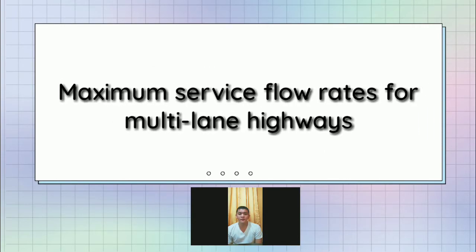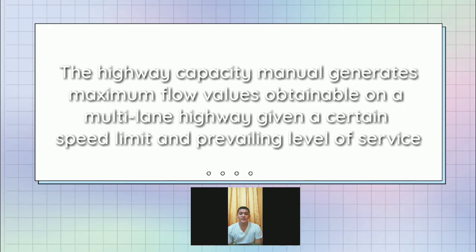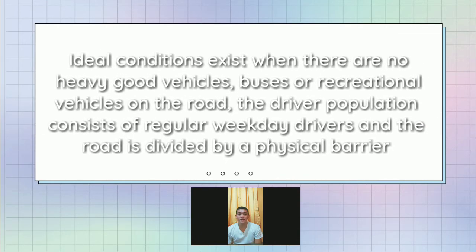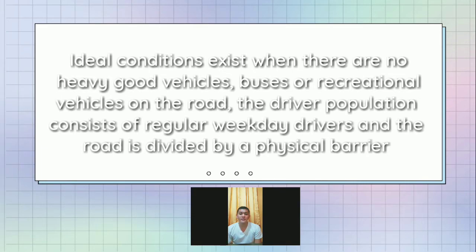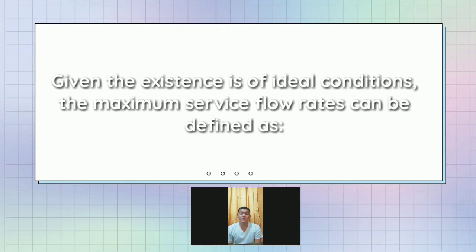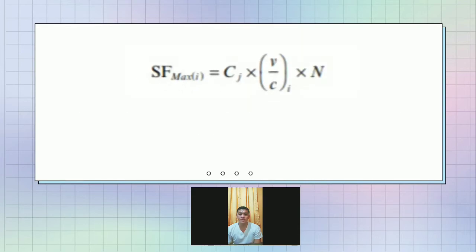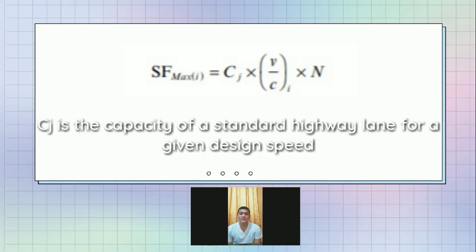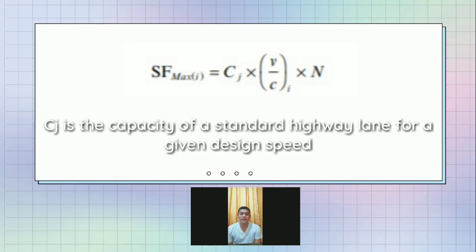Maximum service flow rates for multi-lane highways. The highway capacity manual generates maximum flow values obtainable on a multi-lane highway given a certain speed limit and prevailing level of service. Ideal conditions are met when there are no heavy good vehicles, buses, or recreational vehicles on the road. The driver population consists of regular weekday drivers and the road is divided by a physical barrier. Given the existence of ideal conditions, the maximum service flow rate is defined as maximum service flow equals CJ times V over C times N, where N is the number of lanes in each direction and CJ is the capacity of the standard highway lane for a given design speed.